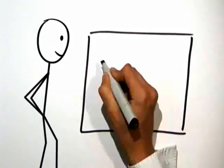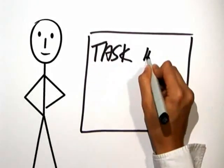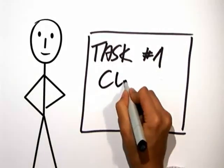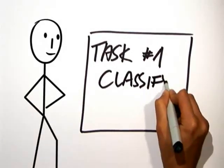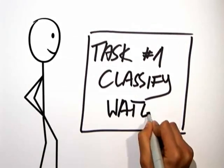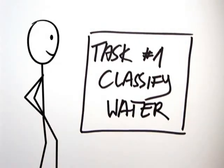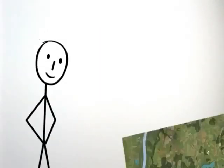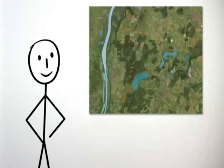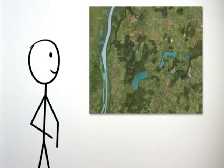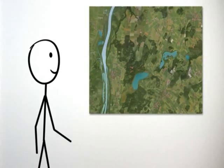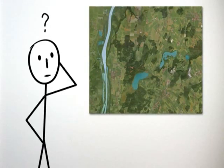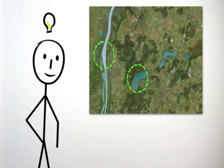Let's begin with a relatively simple example. For task number one, we've chosen to extract water from a remote sensing data set. This is how to classify water. When visually inspecting the data set, water areas are immediately recognized. But how is a computer-based method possible?